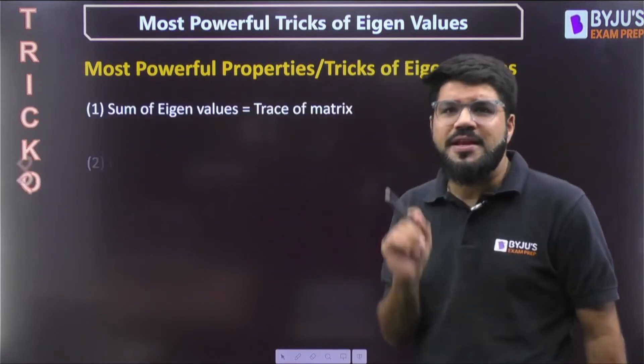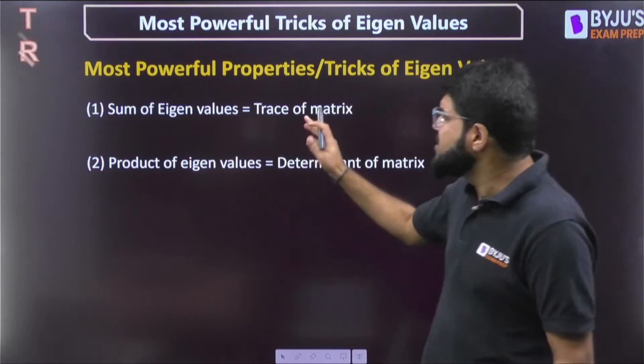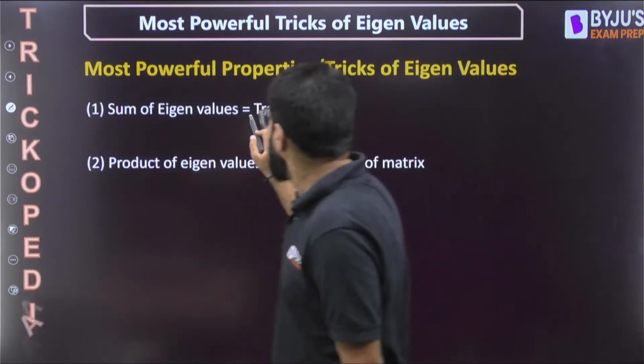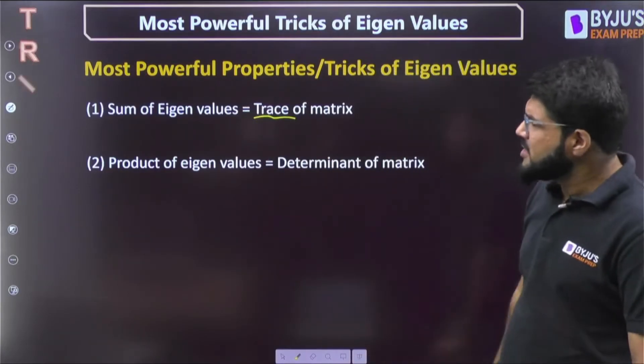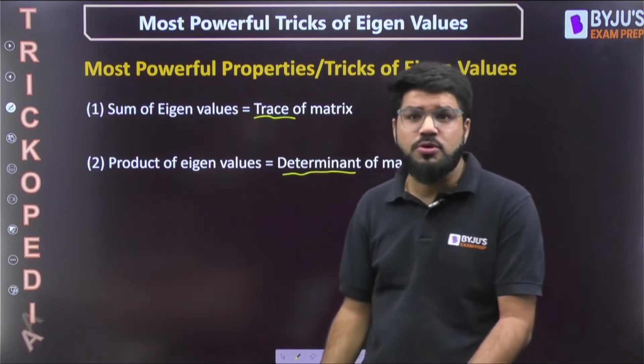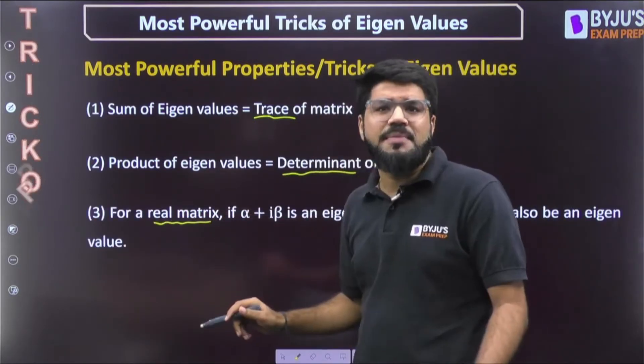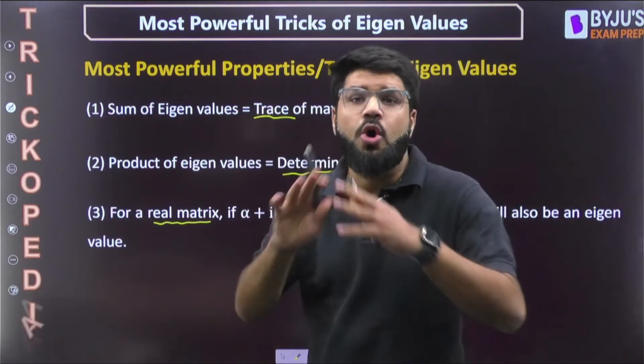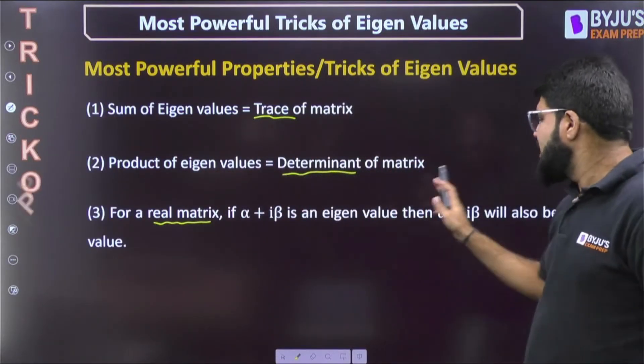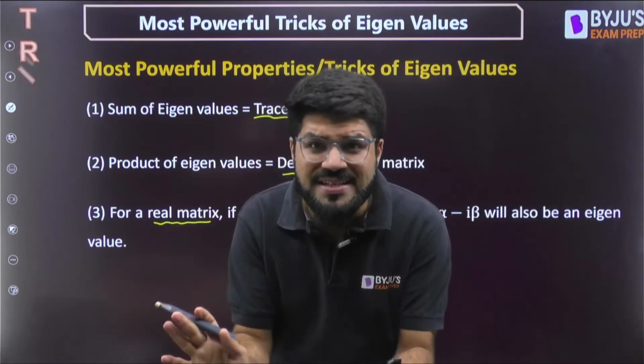I refer to a combination of three useful properties. Number one: the sum of eigenvalues is always equal to trace of the matrix. Trace is the sum of diagonal numbers. Number two: the product of eigenvalues is equal to determinant of the matrix. And if there is a real matrix, one in which all the elements are real numbers, then if alpha plus i beta is an eigenvalue, alpha minus i beta is also an eigenvalue. That means if there is a complex eigenvalue it will be in conjugate pair, it cannot be alone.